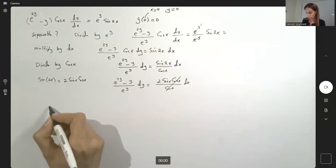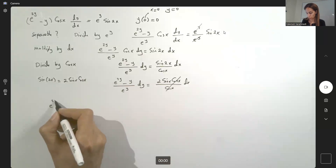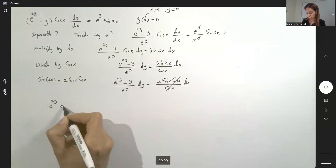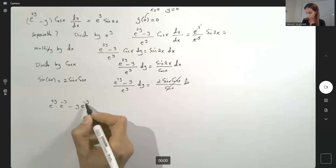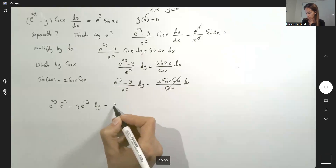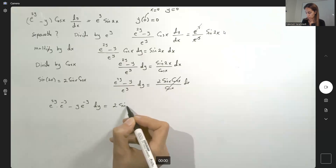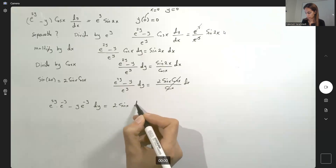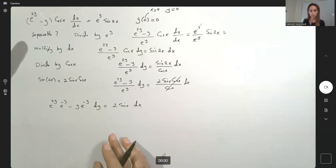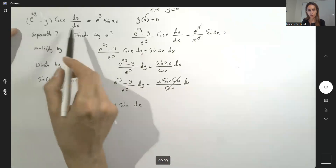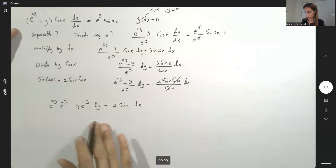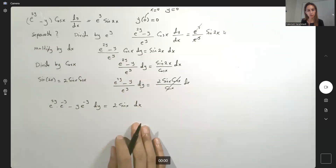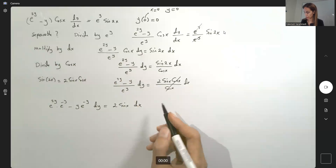Do a little bit of algebra: you have e to the power 2y times e to the power negative y, minus y times e to the power negative y, dy equals 2 sine x dx. We've simplified this more complicated differential equation into a simpler form. Now take the integral on both sides.